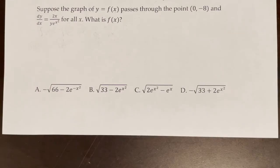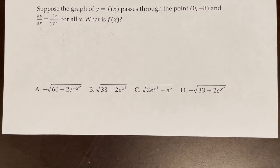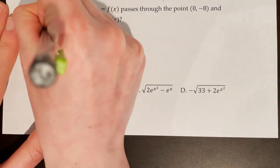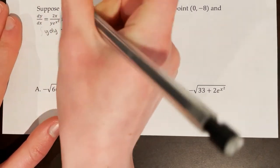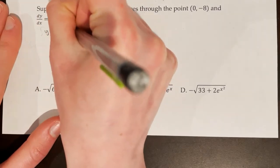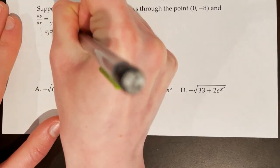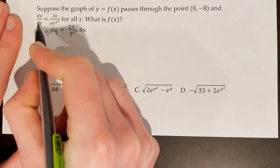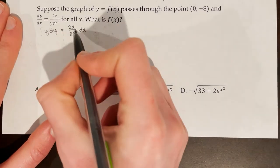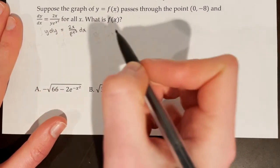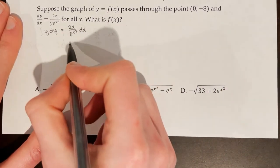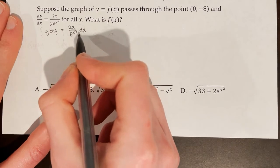Suppose the graph of y = f(x) passes through (0, -8) and dy/dx = 2x/(ye^(x²)) for all x. What is f(x)? Separating variables by multiplying both sides by y and dx: y dy = (2x/e^(x²)) dx, which I'll rewrite as 2xe^(-x²) dx.